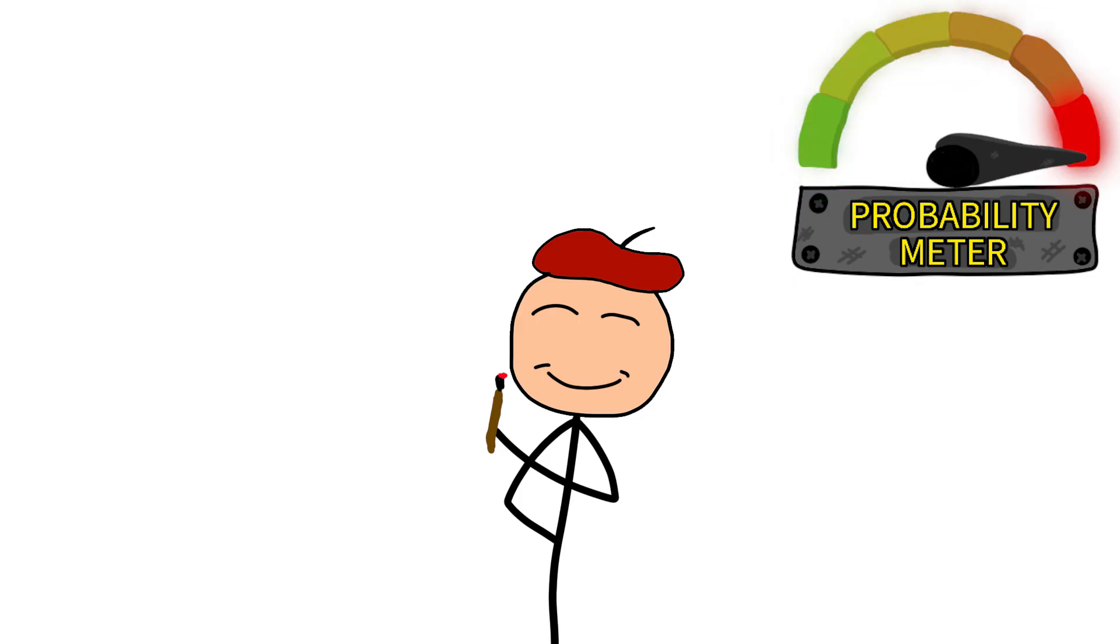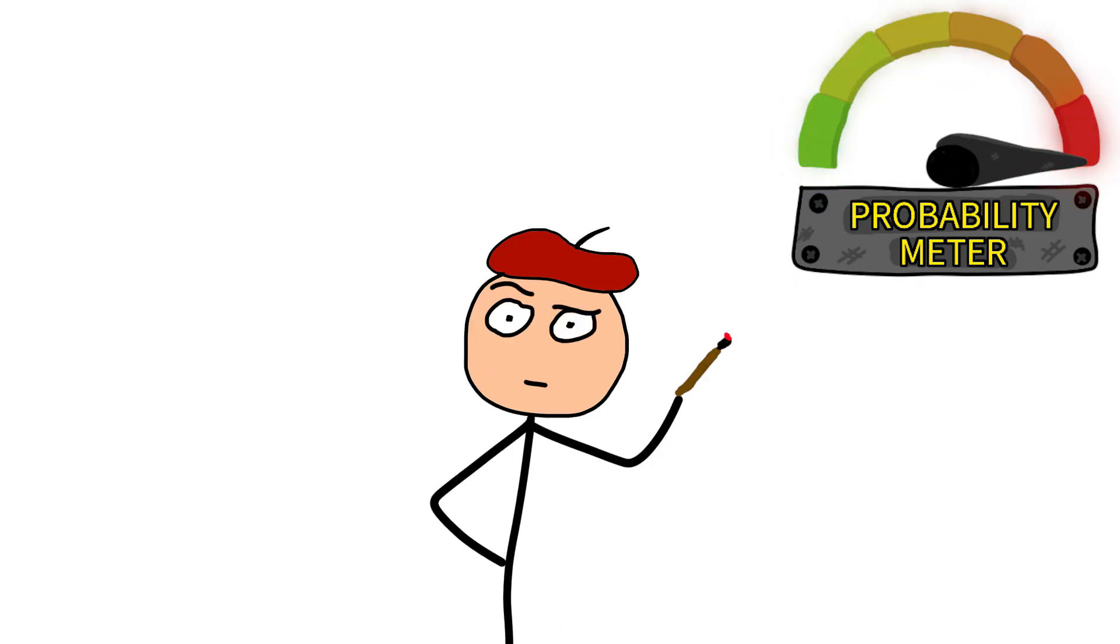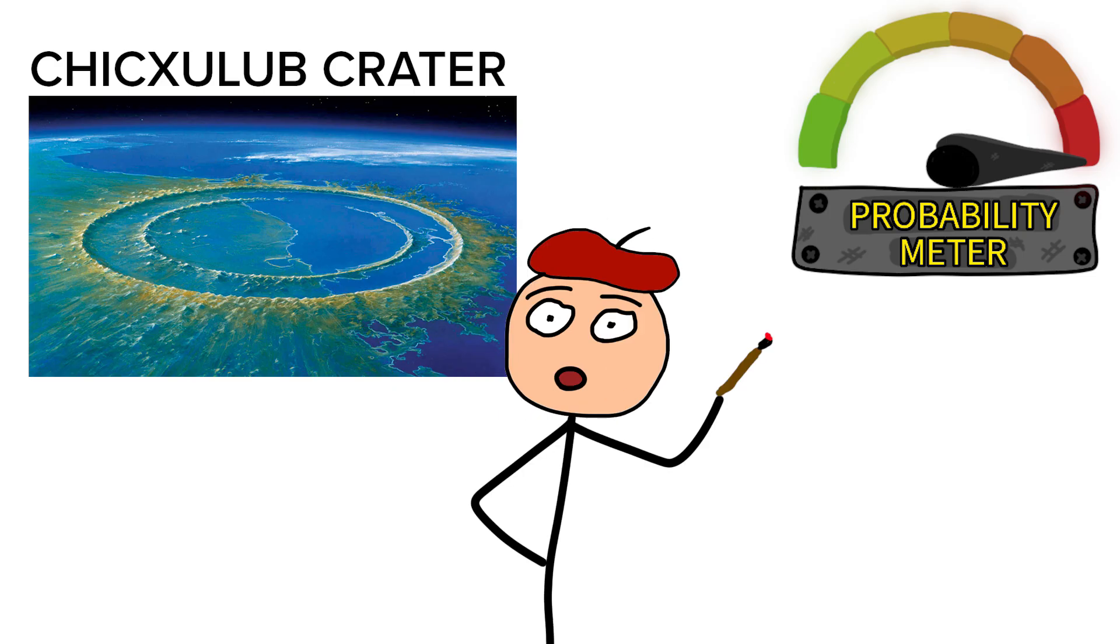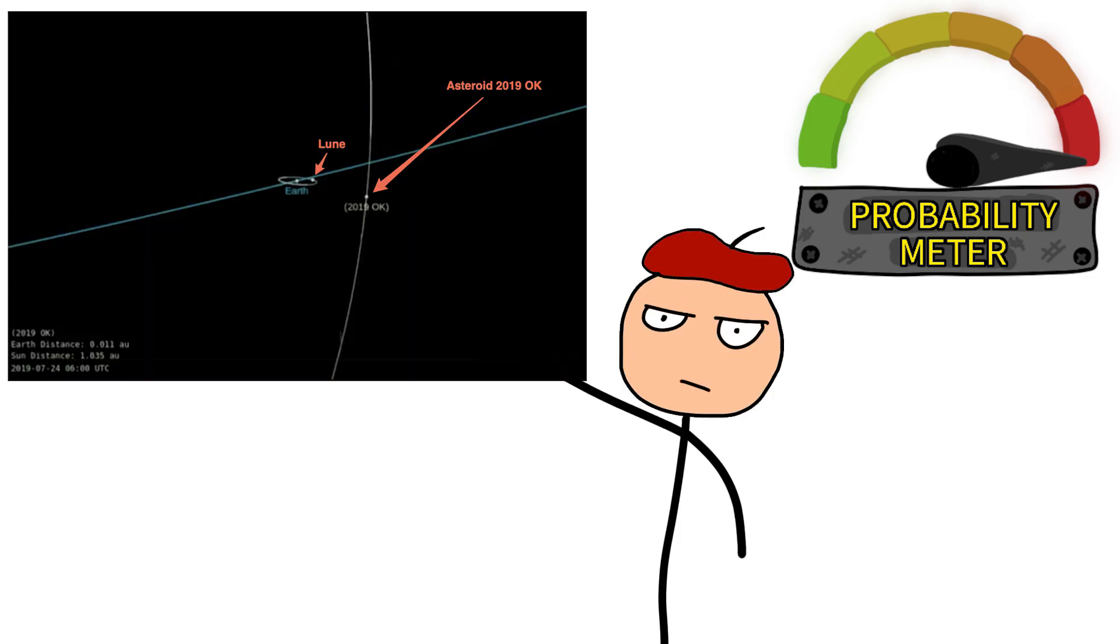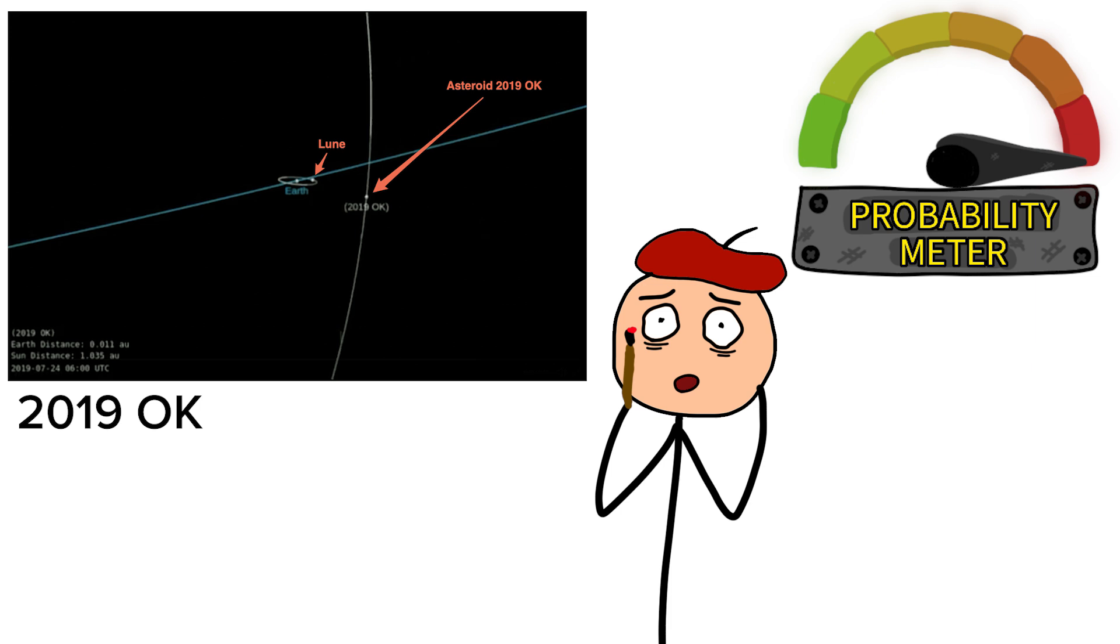It's a very plausible scenario. We know it's happened before. There have been confirmed extinction events, and near misses as recent as 2019 when a 100 meter wide asteroid passed closer than some of our satellites.